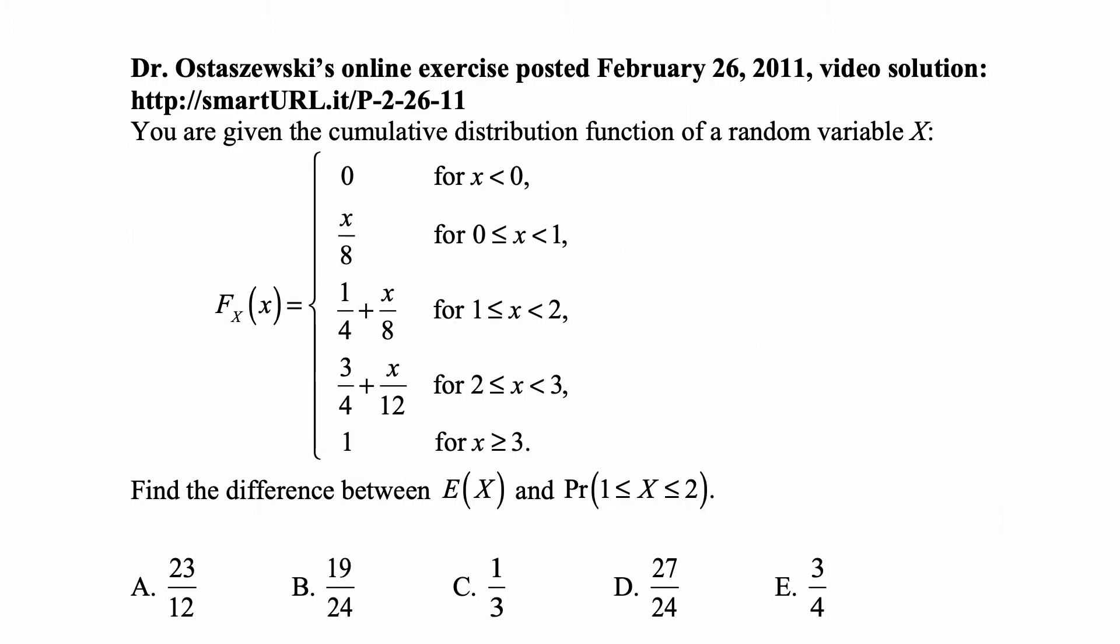Here's a problem for today for exam P on probability. You are given the cumulative distribution function of a random variable X, which is 0 for x less than 0, x over 8 for x between 0 and 1, 1/4 plus x over 8 for x between 1 and 2, 3/4 plus x over 12 for x between 2 and 3, and 1 for x greater than or equal to 3. Find the difference between E(X) and the probability that X is between 1 and 2.